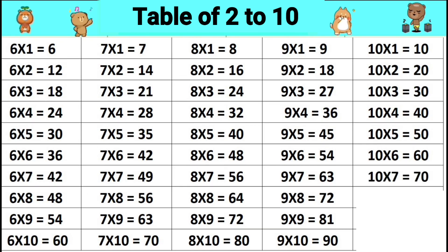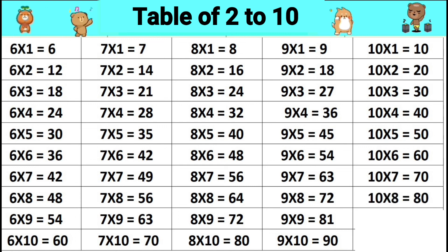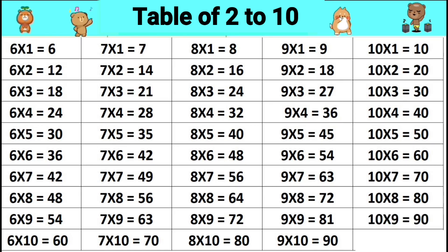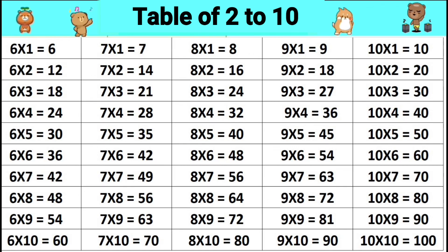Ten sevens are seventy. Ten eights are eighty. Ten nines are ninety. Ten tens are one hundred.